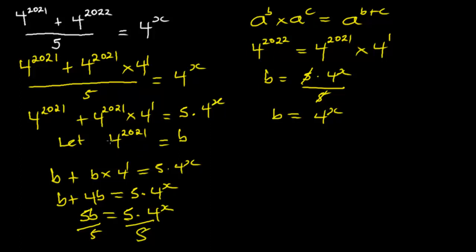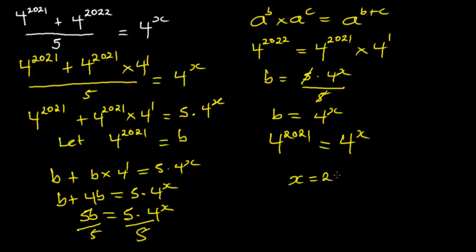We let B be equal to four exponent 2021, so in place of B we write four exponent 2021. We have four exponent 2021 is equal to four exponent X. Since we have the same base, we equate the exponents, and X will be equal to 2021. That is all for this video — don't forget to subscribe, like and comment as well.